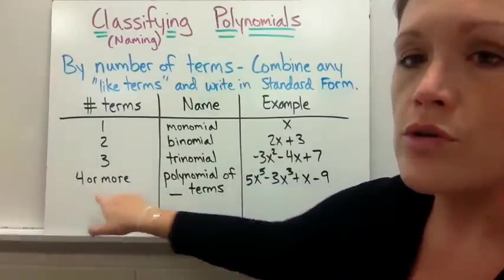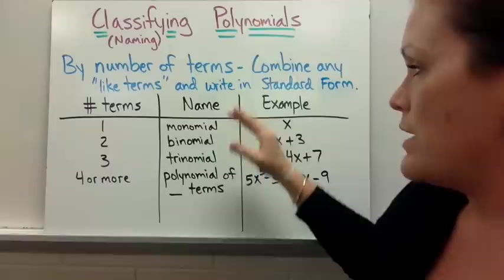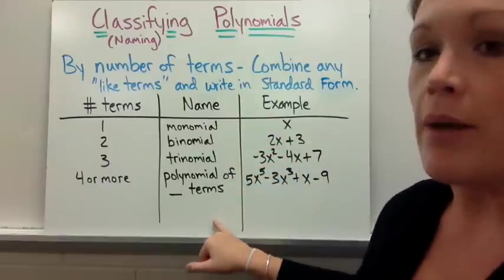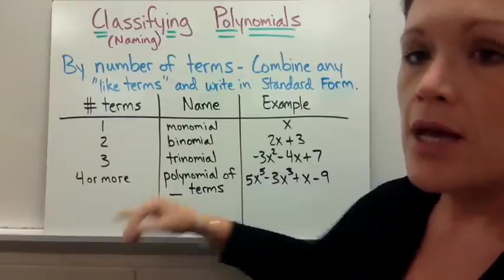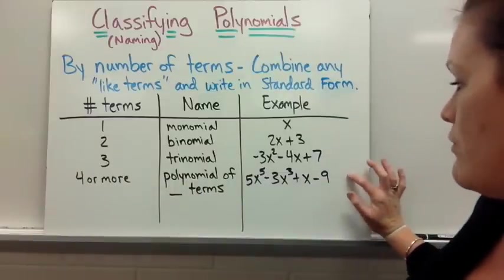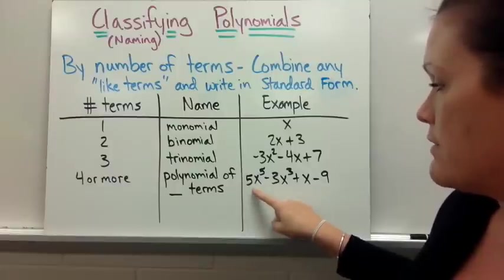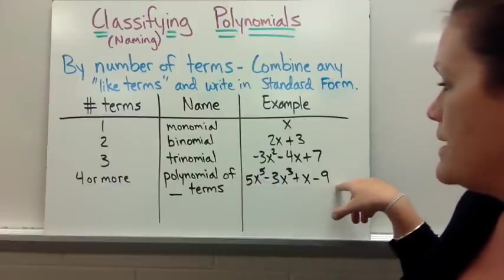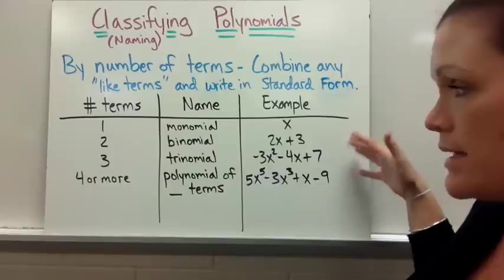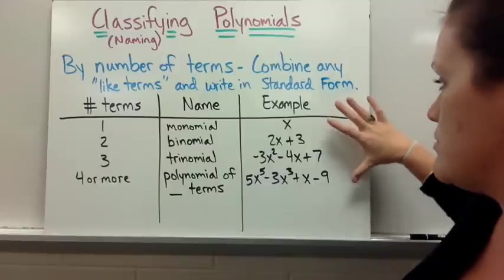If you have four or more terms we don't have any more names to go by, we just call that a polynomial of four terms or a polynomial of five terms and so on. For my example I put 5x to the fifth power minus 3x cubed plus x minus 9.